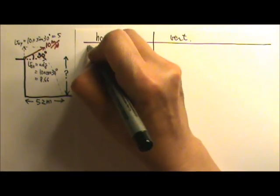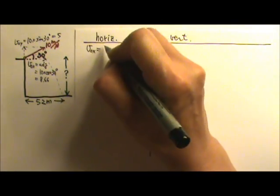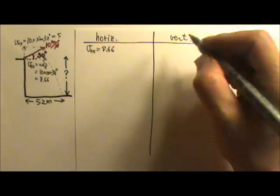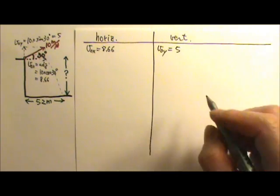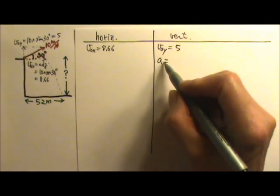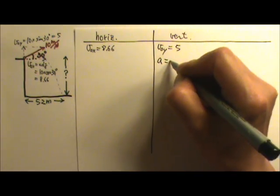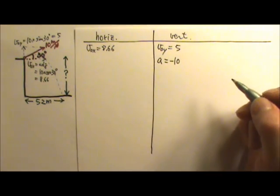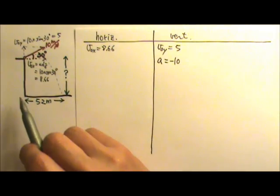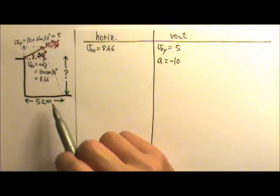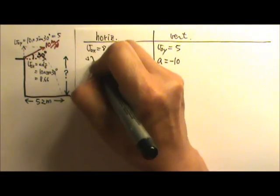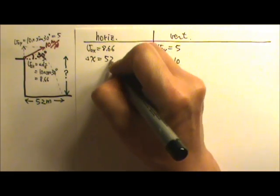So the horizontal component of the initial velocity is 8.66. The vertical component is 5. For the vertical side, of course, we also know that the acceleration is negative g. I'm just going to round it to 10 again. We know that the projectile lands 52 meters away from the base of the cliff. So 52 meters, that's the horizontal displacement.